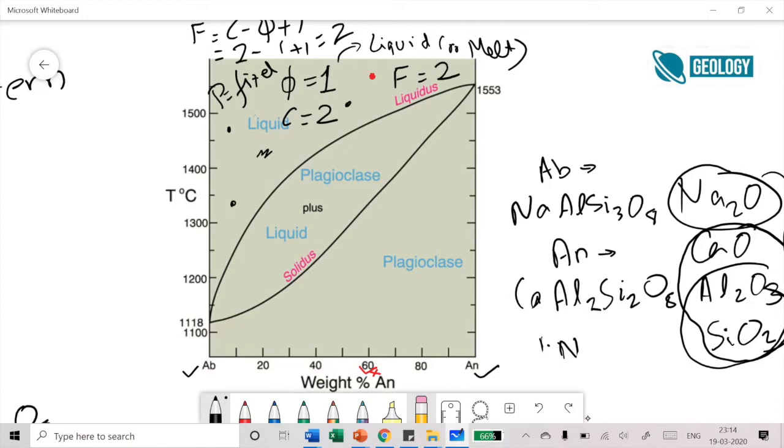Now let's say I start to cool my system. If I cool it, its temperature is going to decrease but my composition, overall composition, will remain fixed. Because my X value is fixed and my Y value is continuously decreasing, which is temperature, I'll get a straight line here until at this point I hit my liquidus curve.